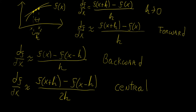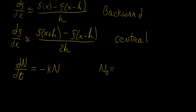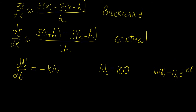Let's consider a very simple problem. Say we have a first-order differential equation — you'd recognize this as an exponential decay problem — where n represents population size and the initial population is 100. Normally, we'd separate variables, integrate both sides, and get n as a function of t equal to n-naught times e to the minus kt, where k is the decay rate. But instead, let's approximate this numerically.